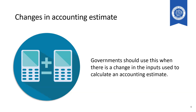The final accounting change covered by this GASB is changes in accounting estimates. In cases where the inputs to an accounting estimate are changed, that change will be covered by a change in accounting estimate. Note that this is specific to the inputs used to calculate the estimate, not the estimate just changing over time. From a financial statement perspective, these changes will be recognized prospectively.